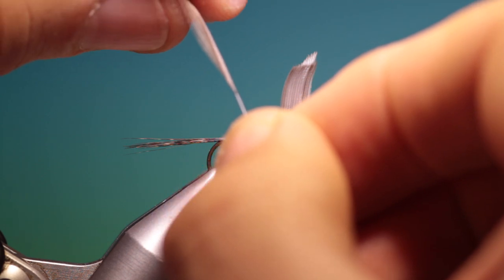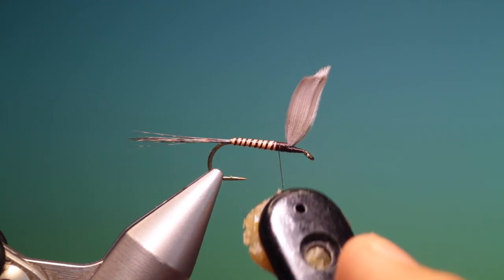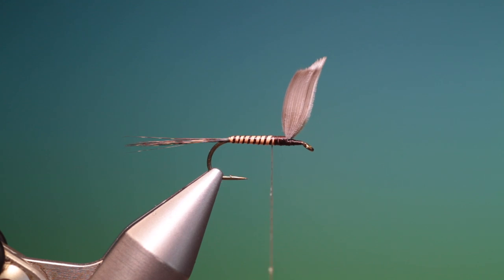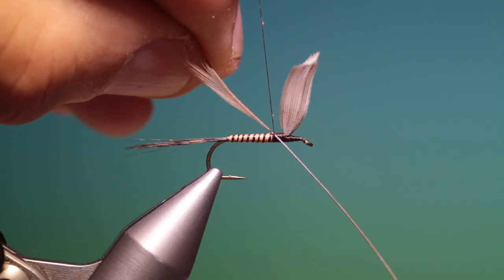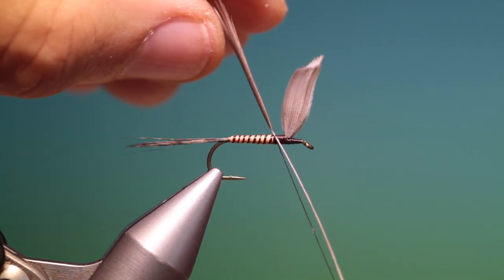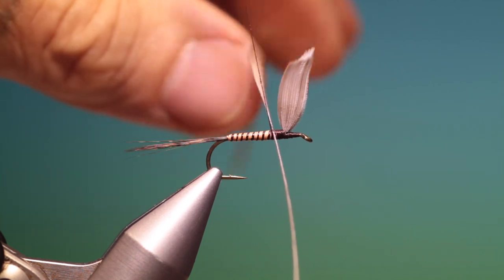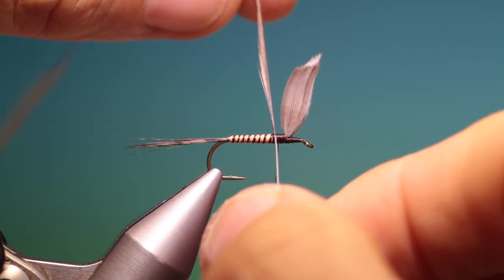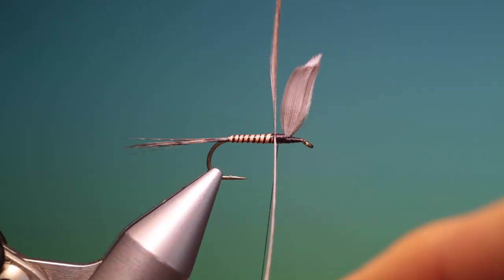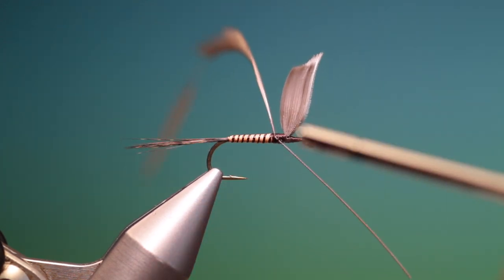So I'm using a medium dun hackle for this. So what I'd like to do first is just put a little bit of wax on my thread. And go left to right. And then we go right to left. And then we go once behind and in front. And that should keep your hackle nice and parallel 90 degrees to the hook shank. And what we'll do is bend the hackle forward like that.